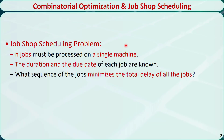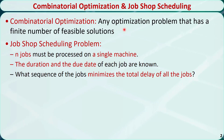The job shop scheduling problem is described as follows. There are a total of n jobs that must be processed on a single machine. The duration and the due date of each job are known. We need to decide the sequence of the jobs to minimize the total delay of all the jobs. The job shop scheduling problem is a typical combinatorial optimization problem, which is defined as an optimization problem with a finite number of feasible solutions.